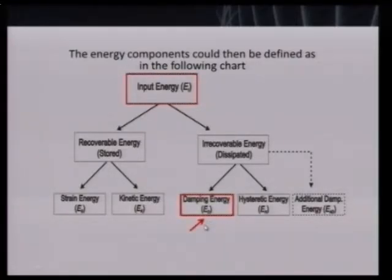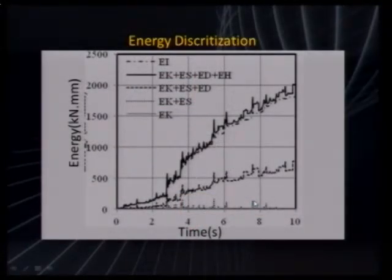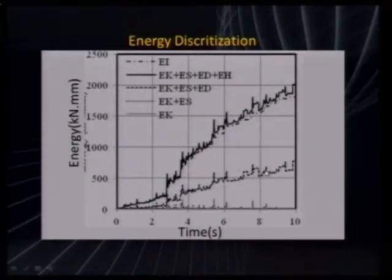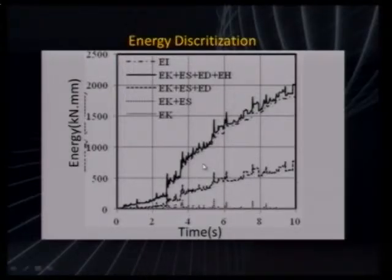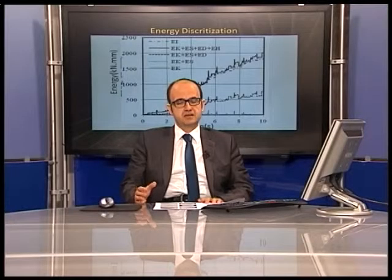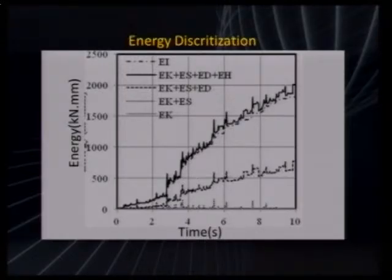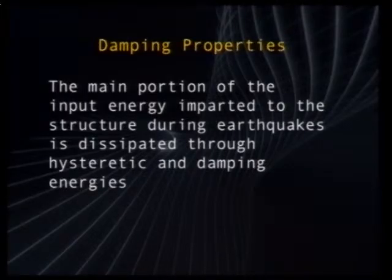If we increase the damping energy, the hysteretic energy will be decreased. We have to discretize the energy terms in terms of time. The small terms are the strain energy and kinetic energy; the second line gives us the damping energy; and the third line gives us the cumulative summation of strain energy, kinetic energy, and damping energy with the hysteretic energy. Those four terms, when added together, must satisfy the input energy — they cannot be bigger or less than the input energy. If we increase the damping energy, the part of hysteretic energy decreases, leading to less damage during the earthquake.